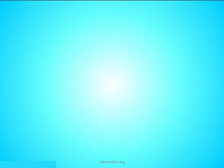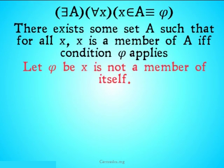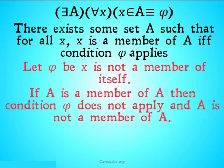The problem is when we use the naive comprehension principle, we see: let φ be X is not a member of itself. If A is a member of A, so we're letting X be A in this case. If A is a member of A, then condition φ does not apply, and A is not a member of A.